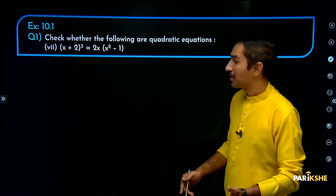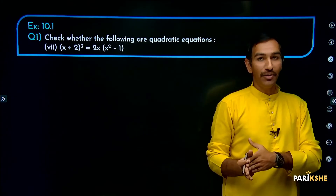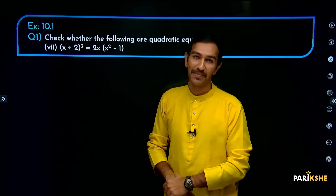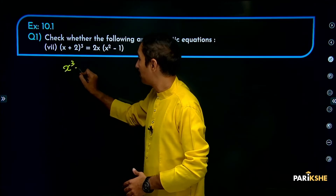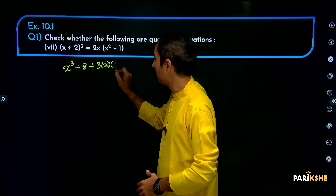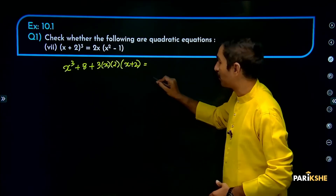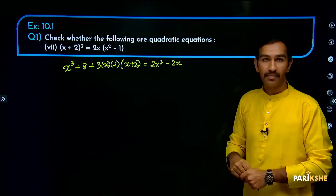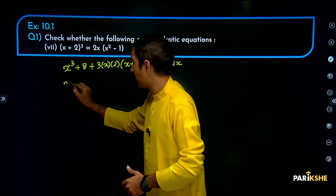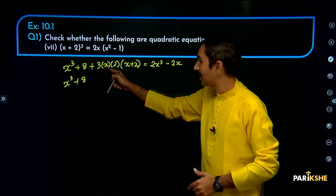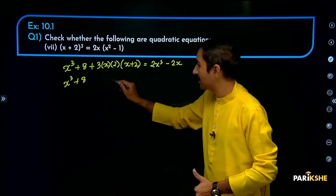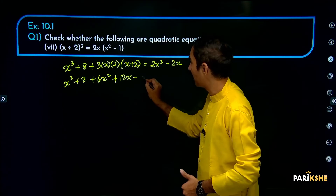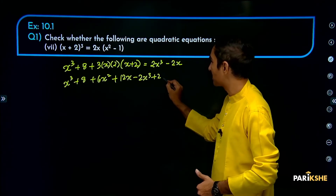Next question: check whether the following is a quadratic equation or not — this one involves a cube. We will use the A plus B whole cube formula: A cubed plus B cubed plus 3AB into A plus B. Expanding: 2x into x squared gives 2x cubed; 2x into minus 1 gives minus 2x. Then x cubed plus 8, plus 3 into x is 3x, 3x into 2 is 6x, 6x into x gives 6x squared, 6x into 2 gives 12x, minus 2x cubed, plus 2x equals 0.